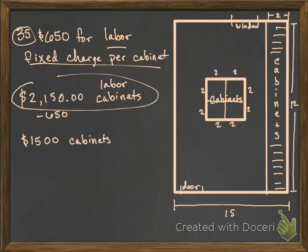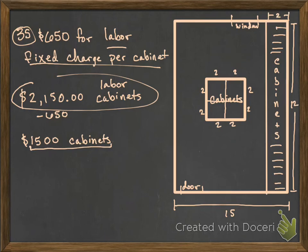The problem tells us that the labor charge and the charge per cabinet remain the same for any number of cabinets built and installed. What's the estimate if she were to have twice as many cabinets? It doesn't really matter how many cabinets she has installed — all we have to do is multiply $1,500 times 2.